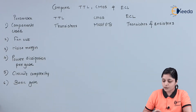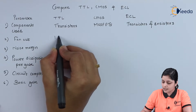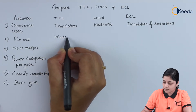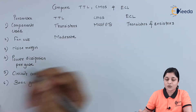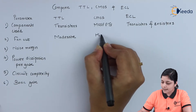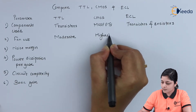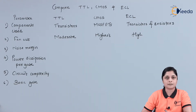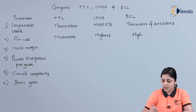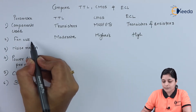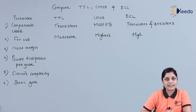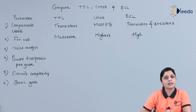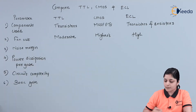The next parameter is fan out. For TTL it is moderate, for CMOS it is highest, and for ECL it is high. Fan out defines the number of outputs that can be connected while getting the appropriate output.